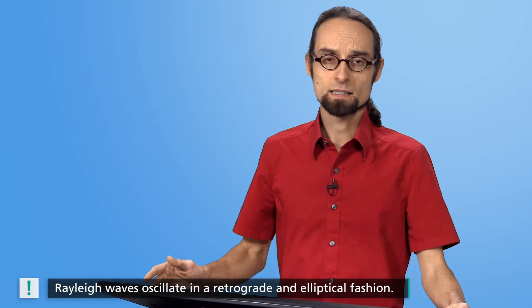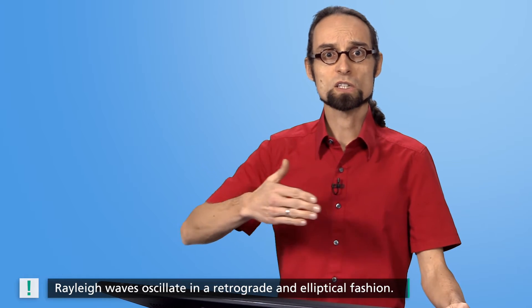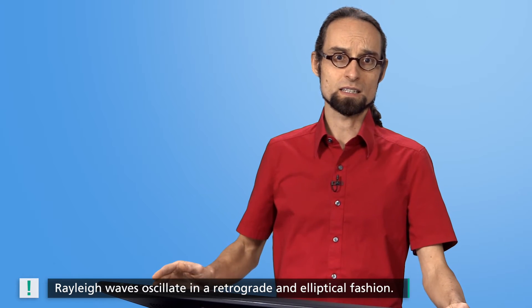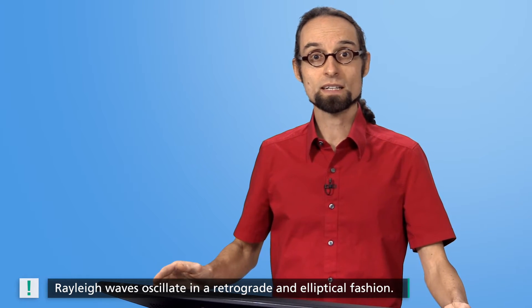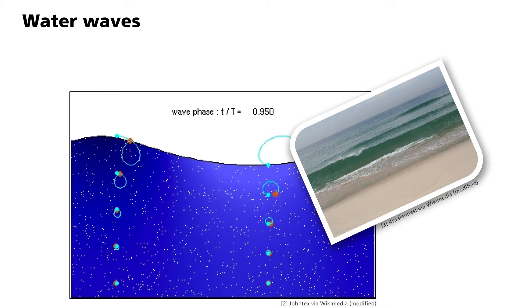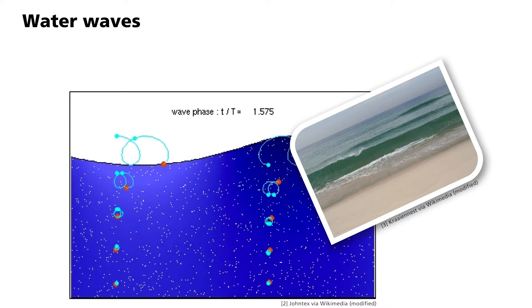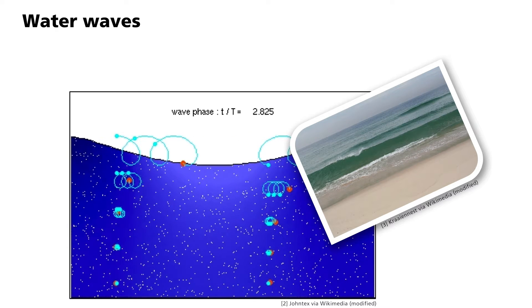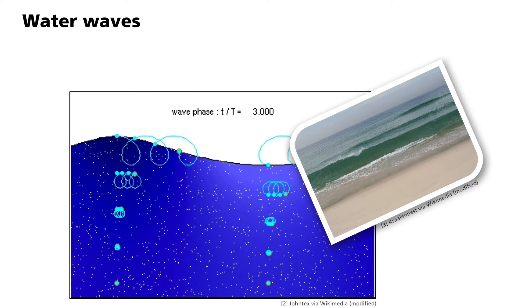Rayleigh waves are a combination of longitudinal and vertically polarized transverse waves. They oscillate in a manner similar to water waves. In this animation, you can see the particle movement of water waves, which describe vertically-oriented elliptical movements. The movement takes place in the direction of wave propagation. We call this prograde.